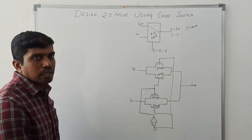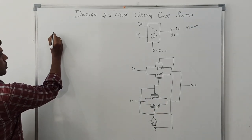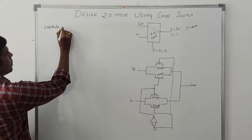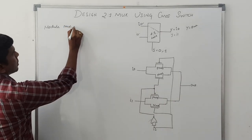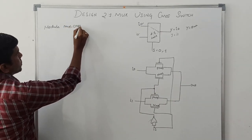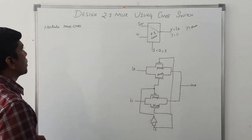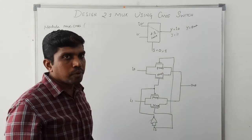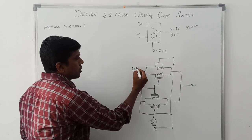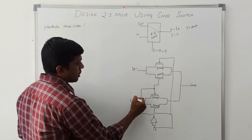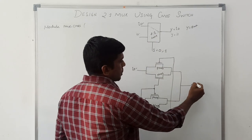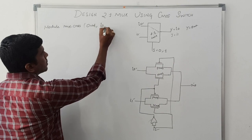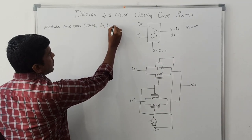Using this diagram, now I am going to write the Verilog HDL code. As usual, first write 'module', then the module name: mux_cmos. Within brackets, mention the input and output variables. In this structure we have three input variables: I0, I1, and S. Out is the output variable. So the port list is: out, I0, I1, then S.